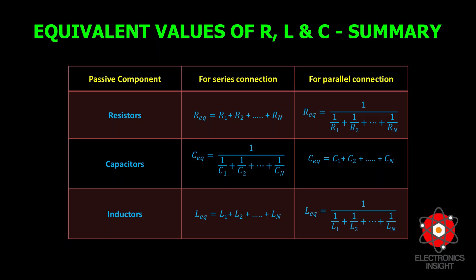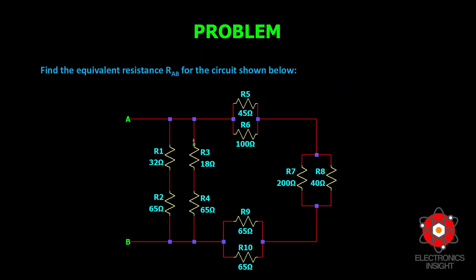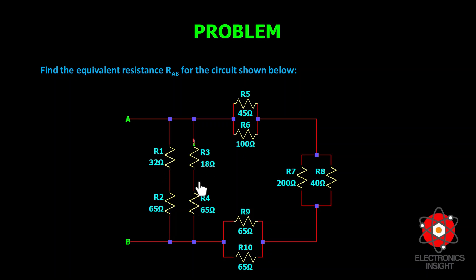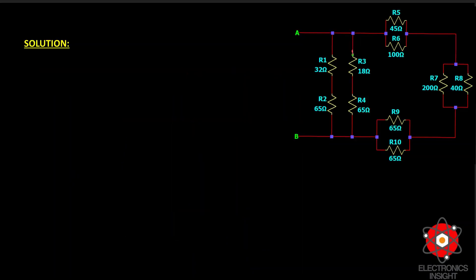Here is the first problem for discussion, where the circuit is a combination of series and parallel resistors, and we need to find the equivalent resistance between nodes A and B. Analyzing the circuit, R7 and R8 are connected in parallel; R5, R6, R9, and R10 are connected in parallel; R1 and R2 are connected in series; R3 and R4 are connected in series; and R1-R2 is in parallel with R3-R4.